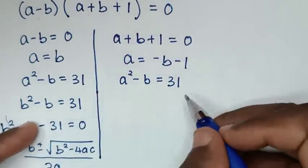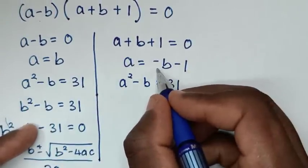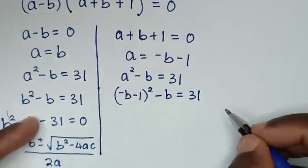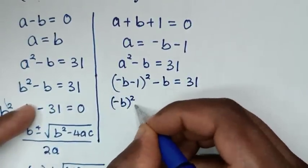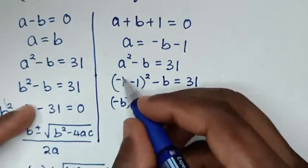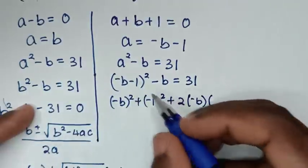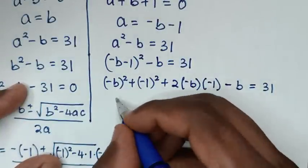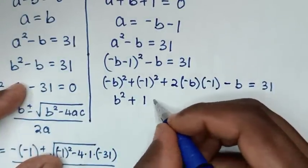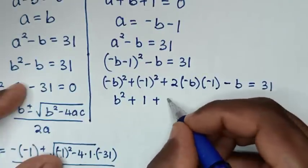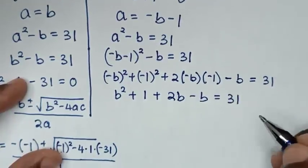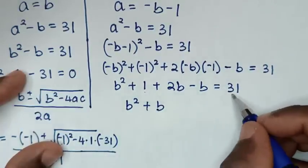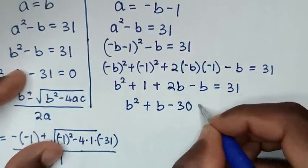Now for the second solution, a equals negative b minus 1. Substituting into the first equation: bracket negative b minus 1 bracket squared minus b equals 31. Expanding the square gives b squared plus 1 plus 2b minus b equals 31, which simplifies to b squared plus b plus 1 minus 31 equals 0, giving b squared plus b minus 30 equals 0.